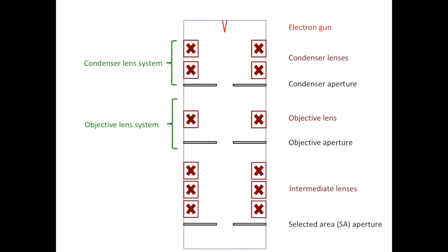Finally, we have the intermediate lenses and the selected area aperture or the SA aperture. They make up the projector lens system. By changing the strength of the intermediate lenses, you can either change the magnification of your image or change the camera length of the diffraction pattern.